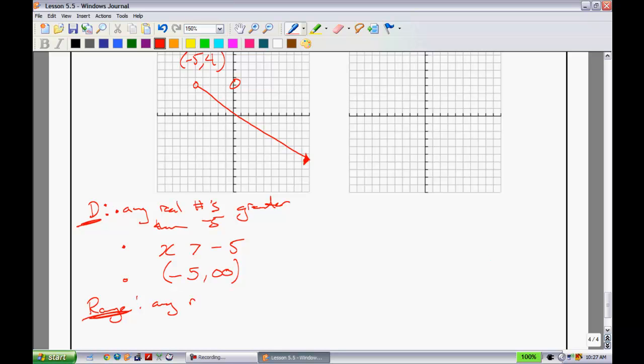So we would say any real numbers less than 4. All right, because they go infinitely downward. How do we describe that in terms of what we call inequality notation? We would say y must be less than 4.